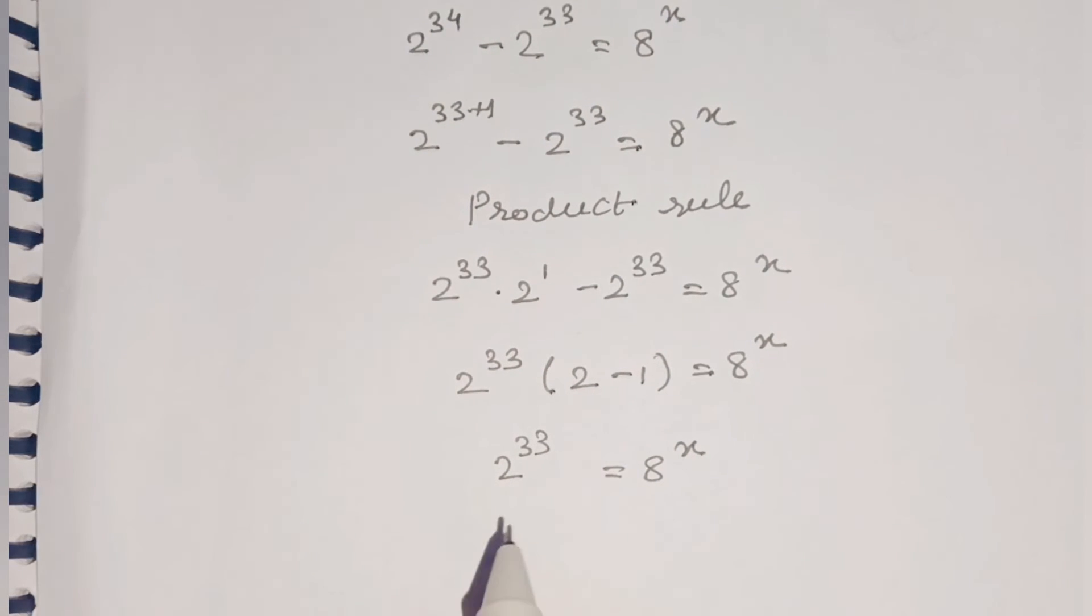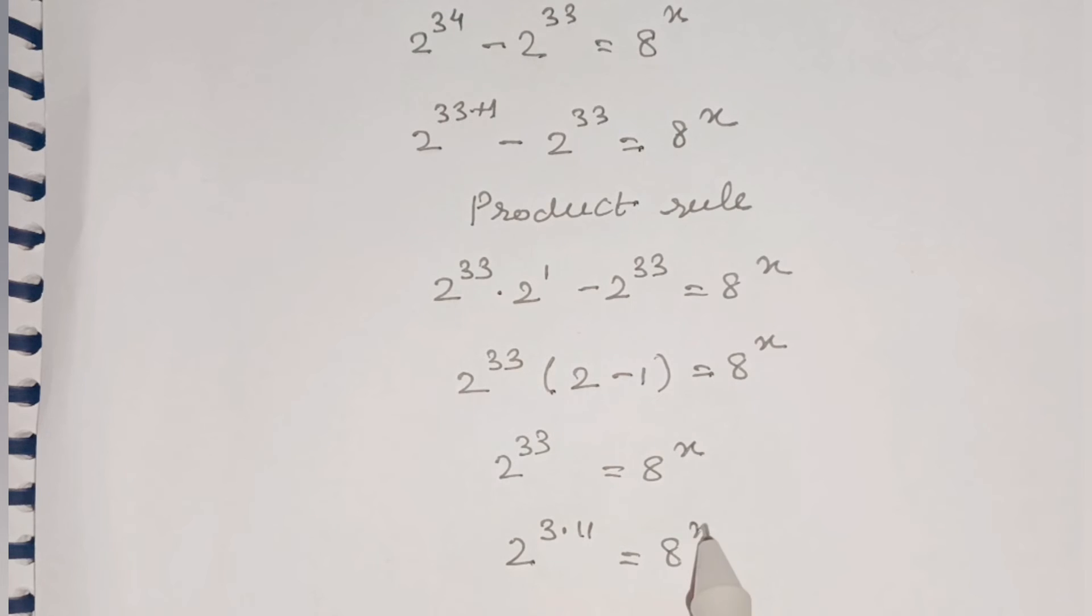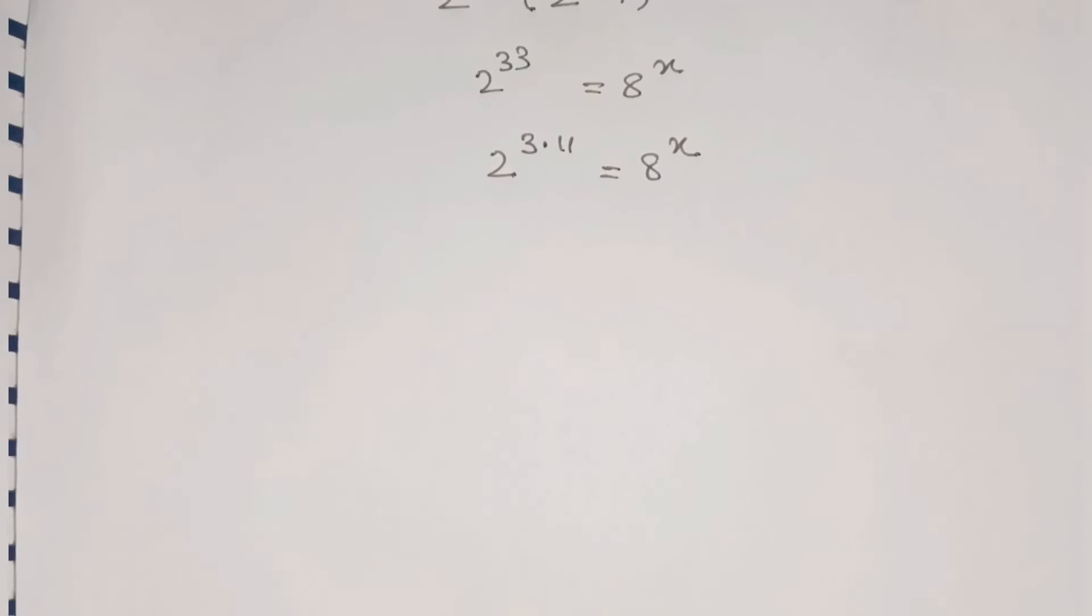Further we can write 33 as 3 into 11, so this will become 2 raised to 3 into 11 is equal to 8 raised to x.